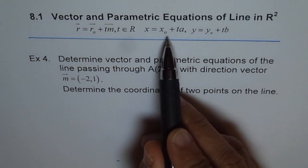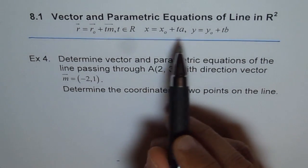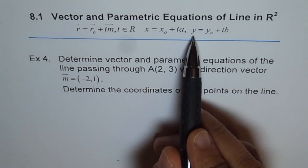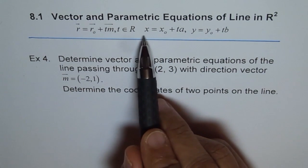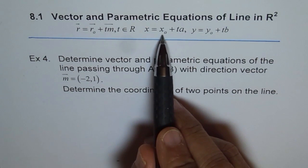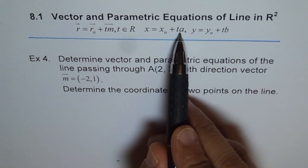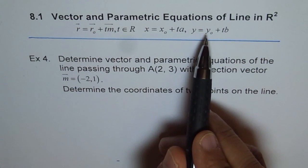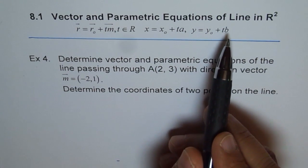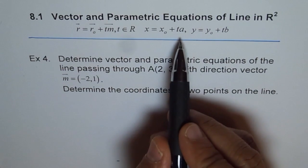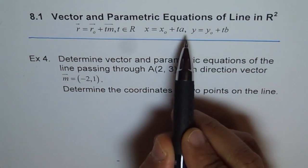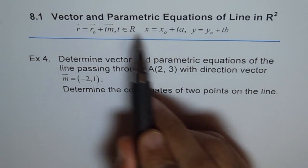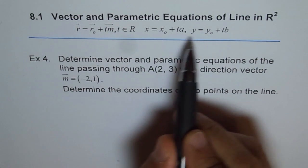The second equation is the parametric equation, where X and Y values can be calculated as X = X₀ plus T times A and Y = Y₀ plus T times B, where A and B are the direction numbers. So it's like an expansion of this and you break it apart into X and Y parts.